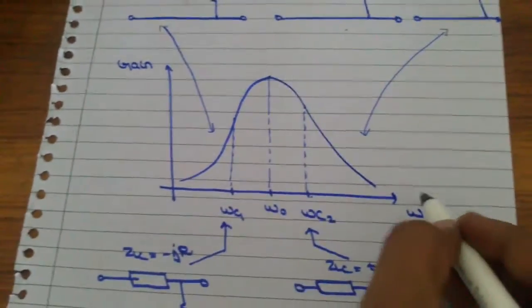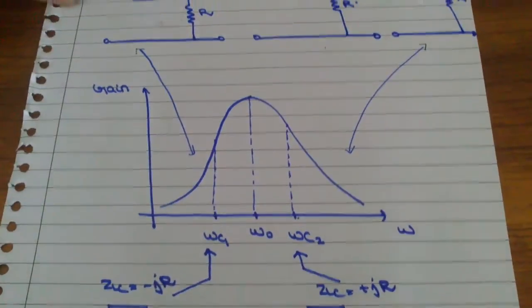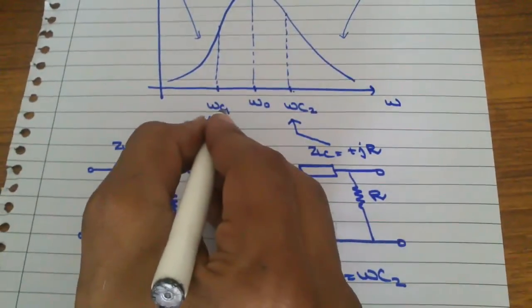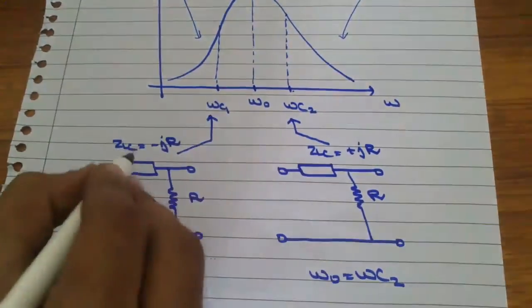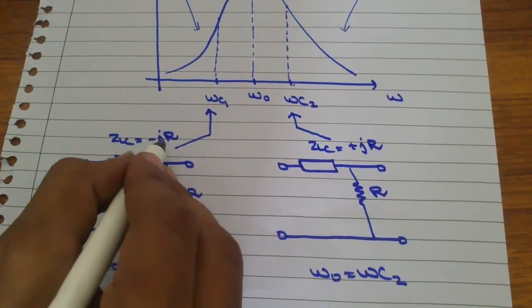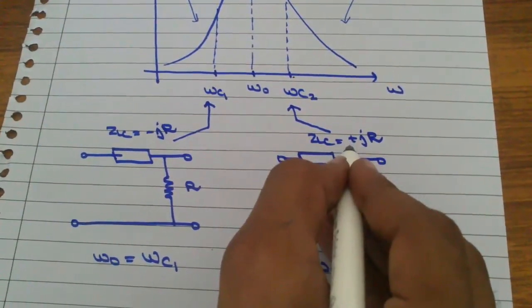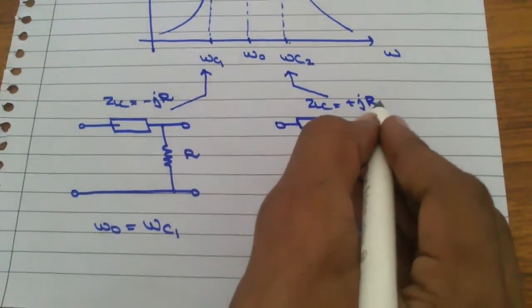We have the graph and the circuit. At below the critical frequencies, the impedance will be minus j times r, whereas above the critical frequencies, the impedance will be positive j times r.